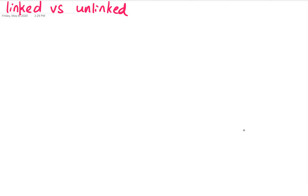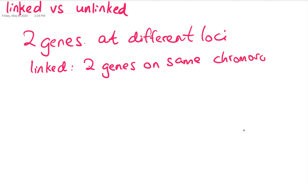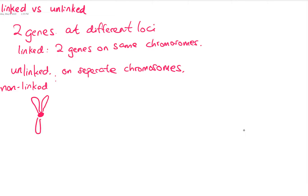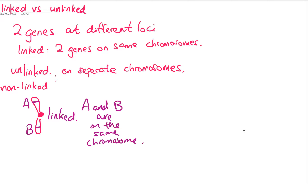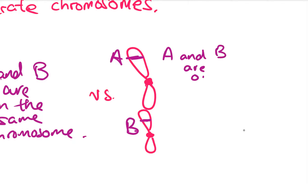Linked genes versus unlinked genes. When we're talking about linked versus unlinked genes, we're comparing the relationship between two genes at two different loci. When two genes are linked, it means they are on the same chromosome. Unlinked genes means they are located on two different chromosomes. In the figurative example, gene A and gene B are linked because they are on the same chromosome but at different locations. To the right is an example of unlinked genes because gene A and gene B are on two different, non-homologous chromosomes.